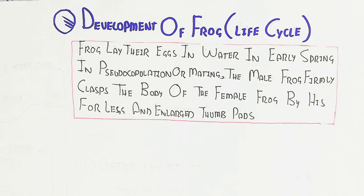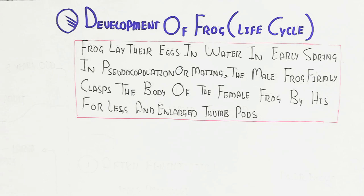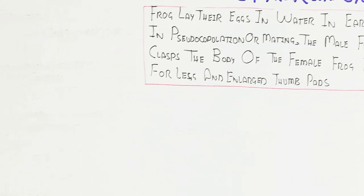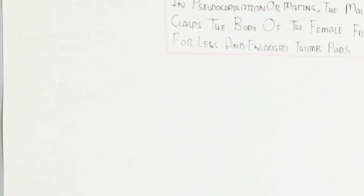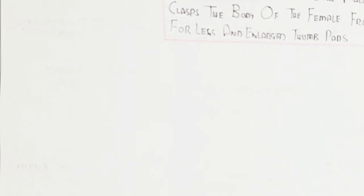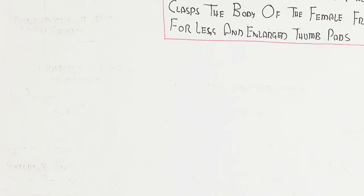The frog lives in water as well as in the terrestrial environment, because water is basically used for respiration through their skin, but also lungs as well as direct diffusion through gills during the adult stage.